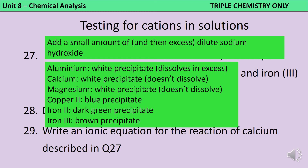The ionic equation for the reaction of calcium ions with hydroxide ions is: Ca²⁺ + 2OH⁻ → Ca(OH)₂.